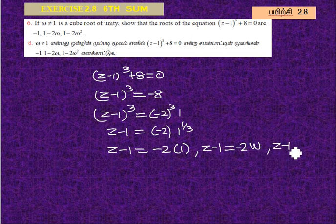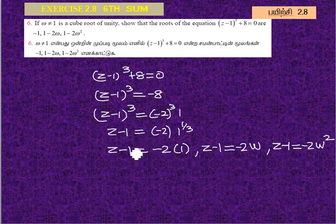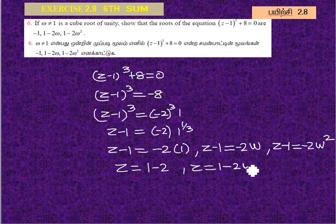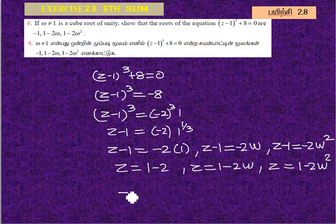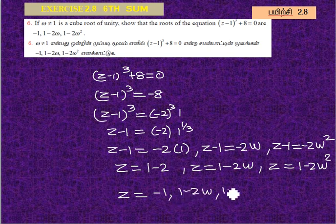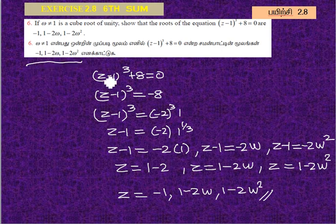Z minus 1 equals minus 2 omega squared. Cube root of unity equals three values: 1, omega, omega squared. So Z minus 1 is minus 1, giving Z equals minus 1. Then Z minus 2 omega, and Z minus 1 equals minus 2 omega squared. The three roots are minus 1, 1 minus 2 omega, and 1 minus 2 omega squared.